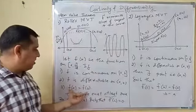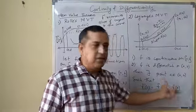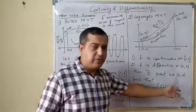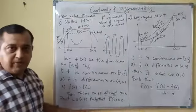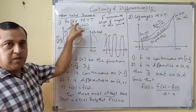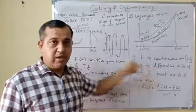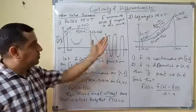Rolle's theorem is essentially the same as Lagrange's. If f(a) and f(b) are equal, then f'(c) is equal to 0, because f(b) - f(a) equals zero.